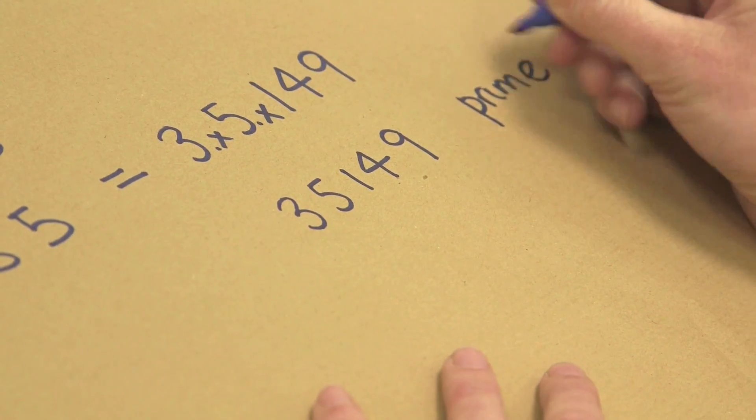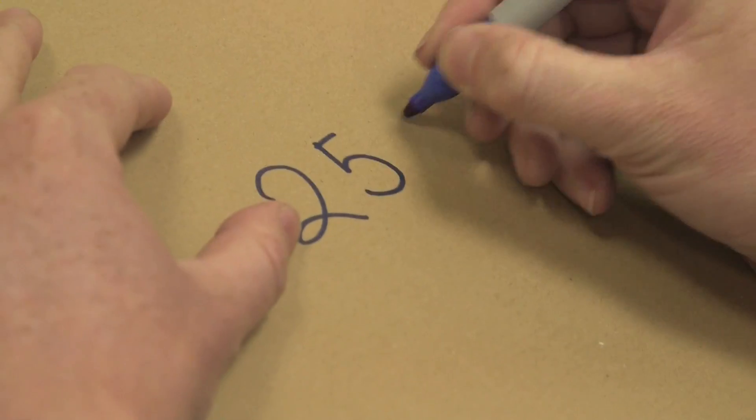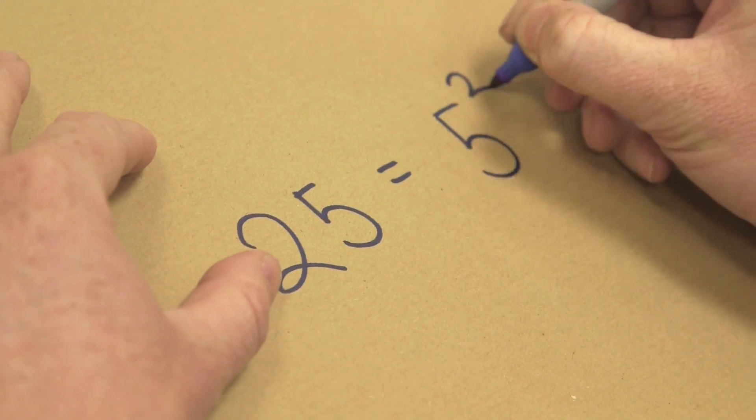So John Conway's conjecture was, if you do this process, you carry out this process for any number, you'll always end up with a prime number. So just to give you another example, let's take 25, which is of course 5 squared.